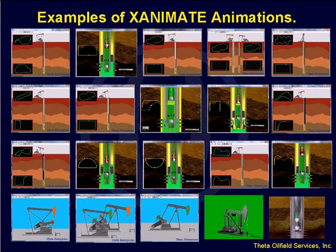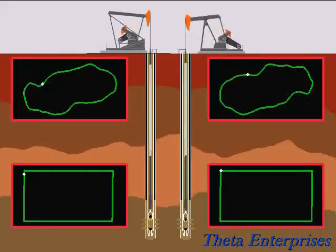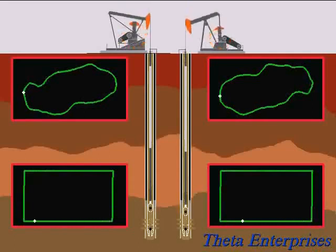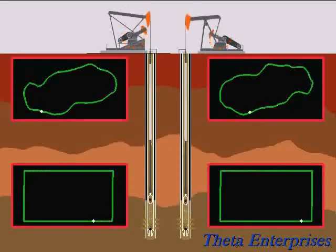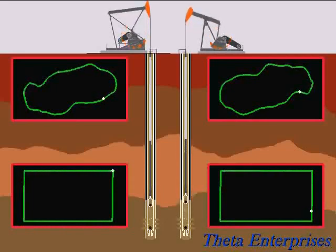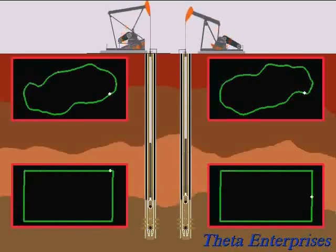In case you were wondering what is the difference between a conventional and a Mark II for a well that has fiberglass and steel rods, this animation shows both at the same time — the Mark II and the conventional side by side. Same well, same pump size, same rod string, same pumping speed. Everything is exactly the same except one side has the conventional unit and the other has the Mark II. You can see it's very interesting to see the difference.